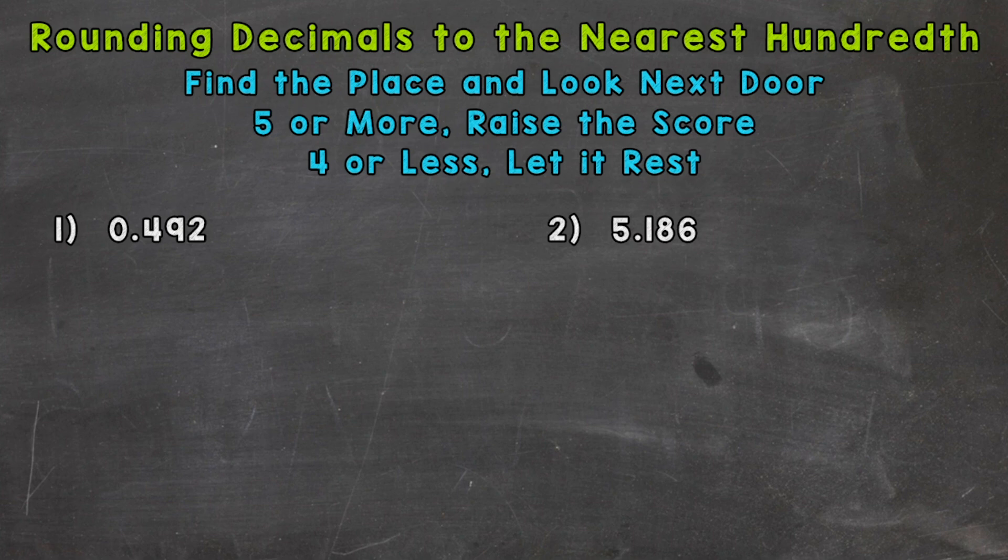So let's jump right into number one where we have 0.492. And the first thing we need to do when rounding a decimal is find the place that we're rounding to and look next door.